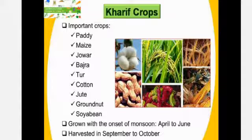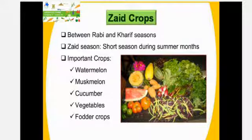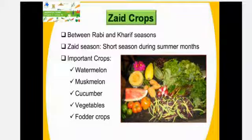The introduction of high yielding variety of seeds, increased use of fertilizers and irrigation refers to green revolution. The success of green revolution in northern states of India have played a major role in the growth of Rabi crops.